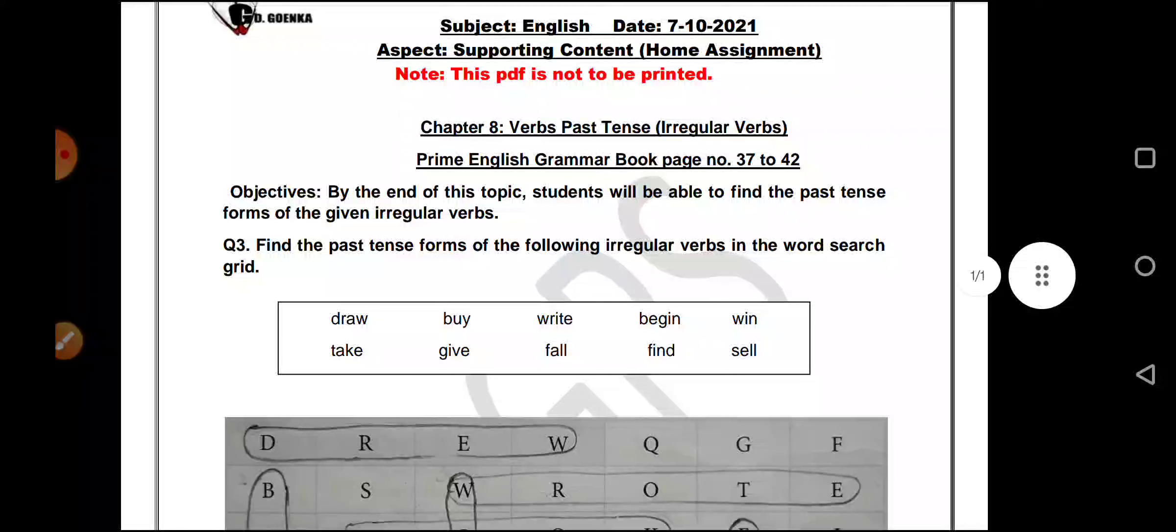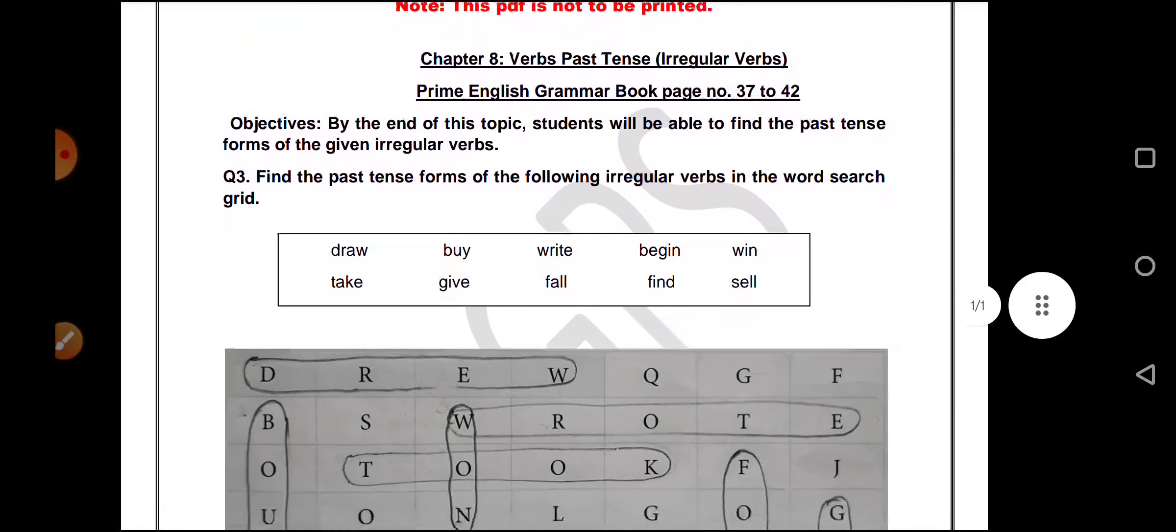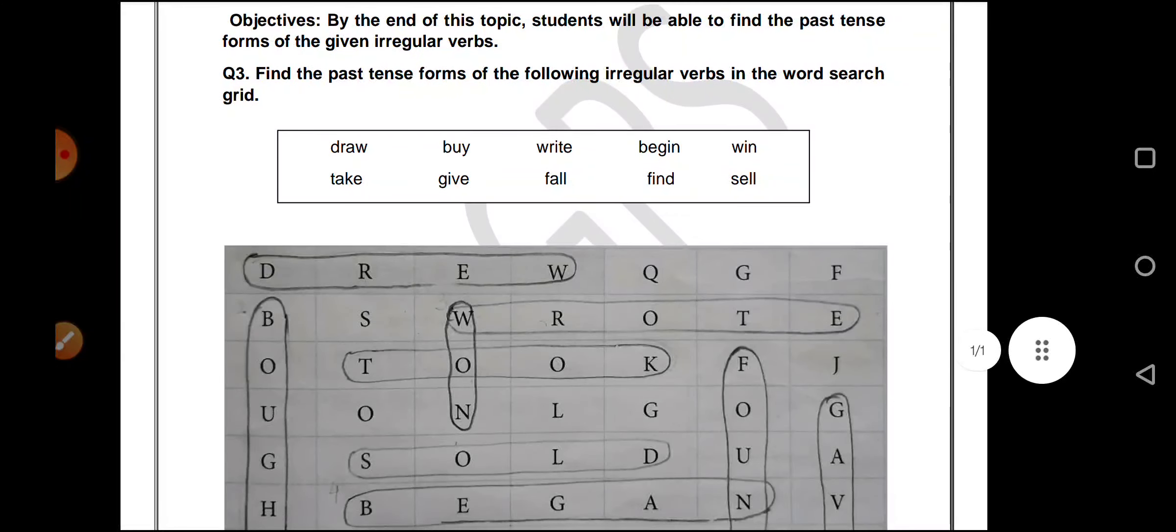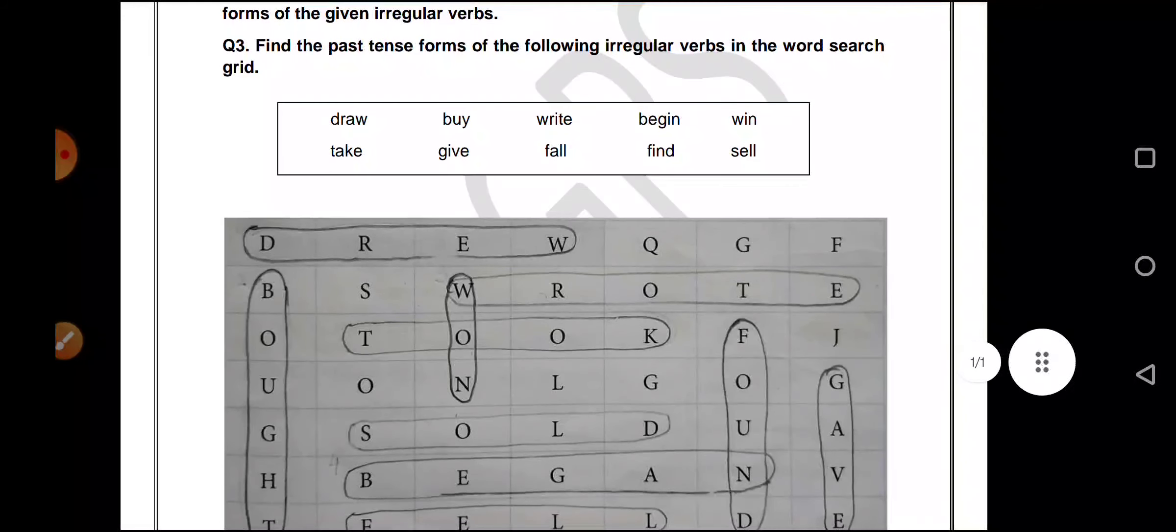Today we'll be doing a question from your Prime English Grammar book. Let's see what is asking us. Find the past tense forms of the following irregular verbs in the word search grid.